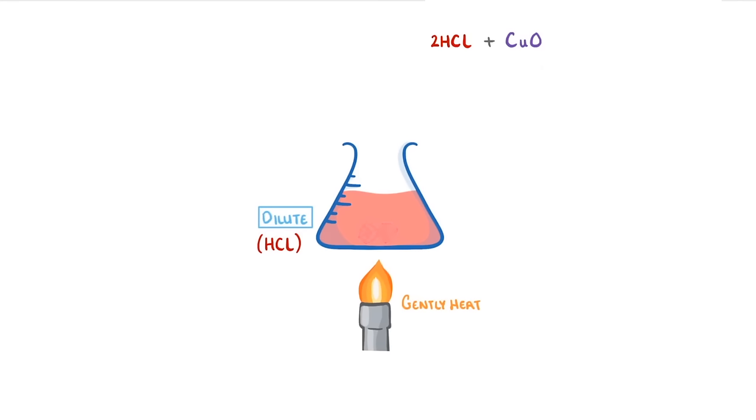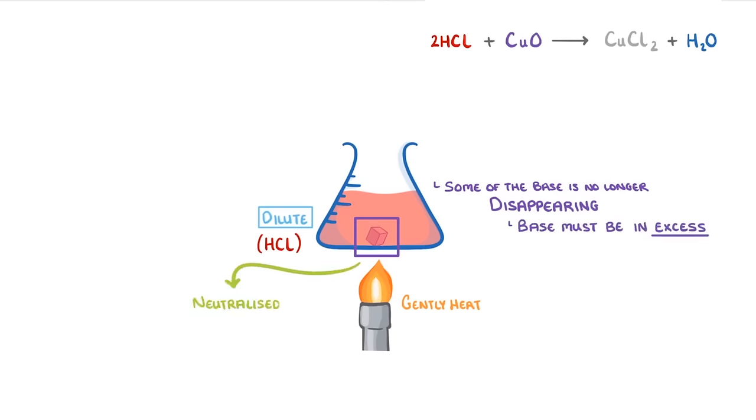At first it will keep disappearing, as it reacts to form aqueous copper chloride and water. But then as you add more, you'll see that some of the base is no longer disappearing. So at this point, we know that the base must be in excess, and we'll have neutralized all of the acid.